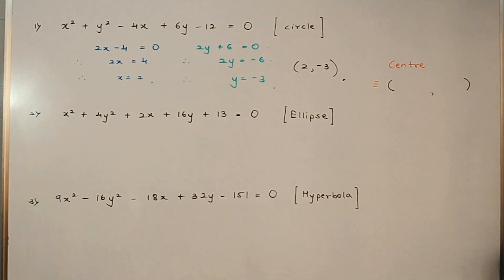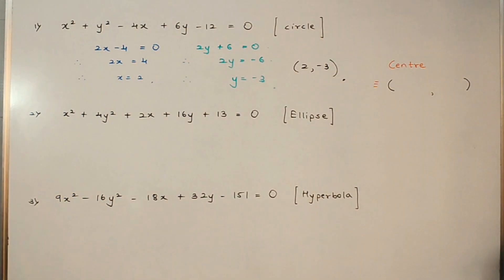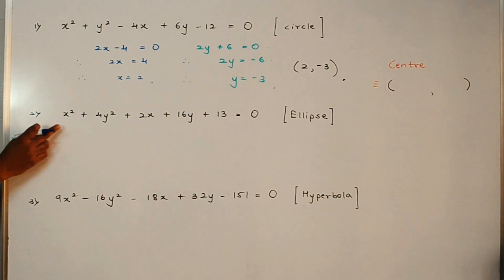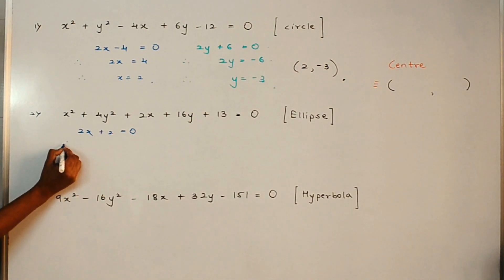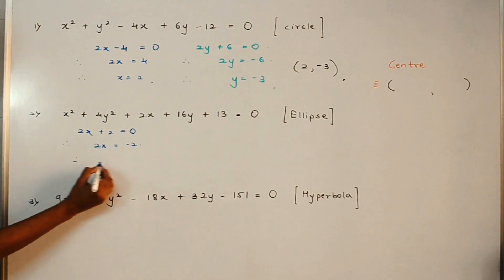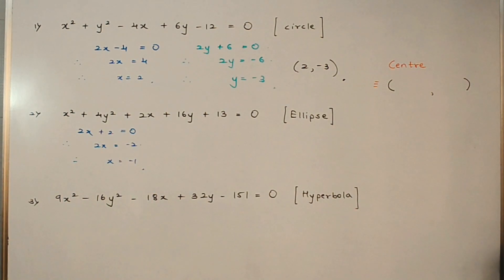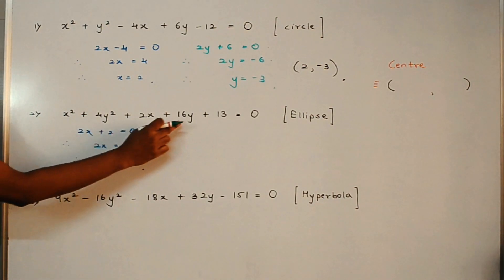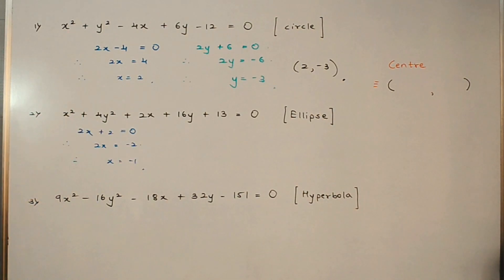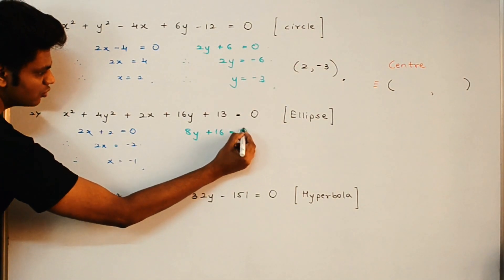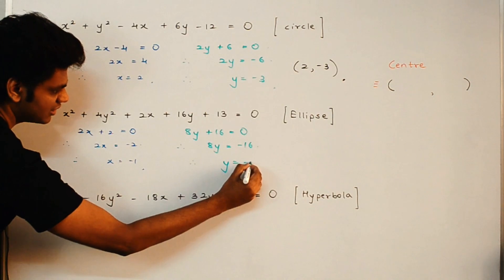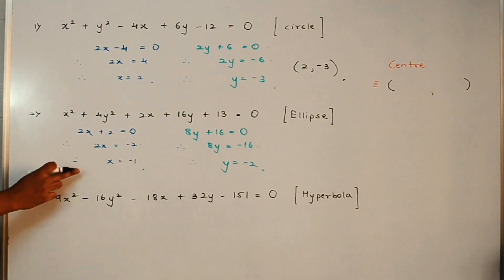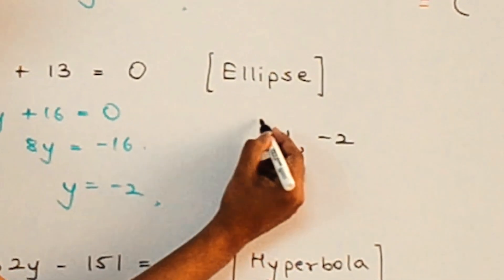Similarly for the ellipse: for the x-coordinate, differentiate x-terms with respect to x and equate to 0. x² derivative is 2x, and 2x derivative is +2, giving 2x = −2, so x = −1. For the y-coordinate, 4y² derivative is 8y, and 16y derivative is +16, giving 8y = −16, so y = −2. Therefore the center of this ellipse is (−1, −2).